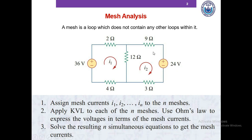So in this circuit I have two meshes. I assigned a current i1 in this mesh and I assigned another current i2 in this mesh. It could be both clockwise or both anti-clockwise, but it's always helpful to follow the same direction for all problems. You cannot take clockwise direction in one mesh and anti-clockwise in another — it has to be consistent within the same problem.